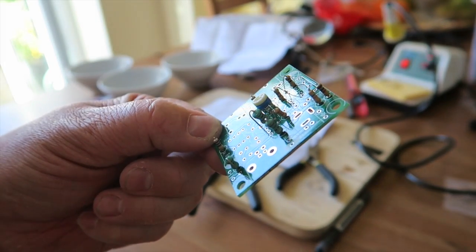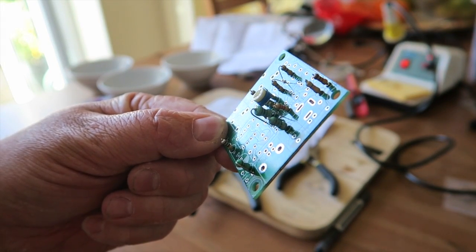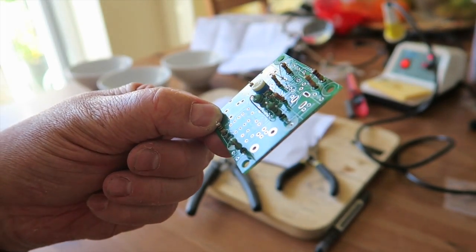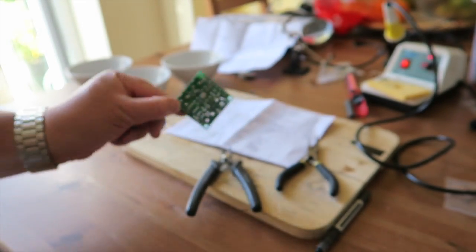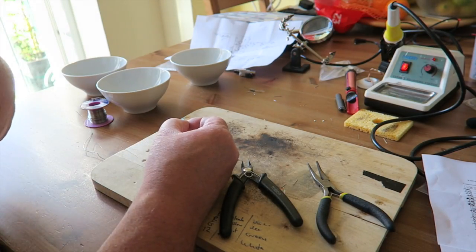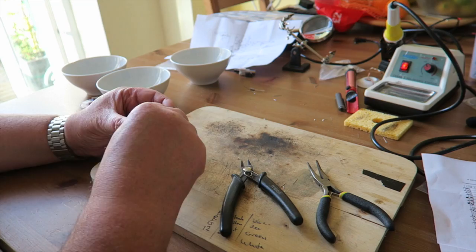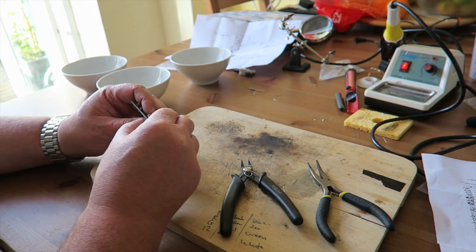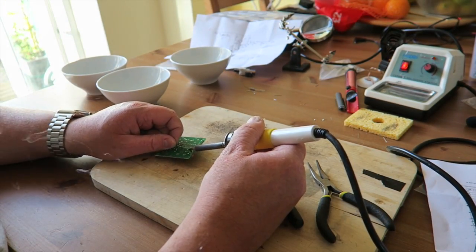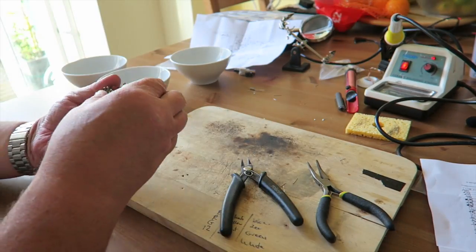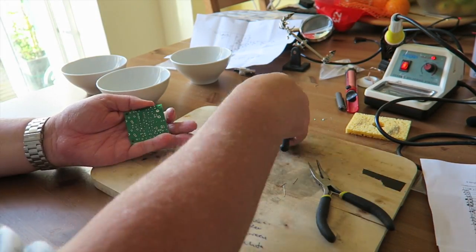Here we are, all the resistors are now fitted including the variable resistor in the middle as well. Now we're going to move on and install the capacitors. Working with the ceramics here, just go around installing each one. As you can see I'm working quite quickly here, going through installing each capacitor and doing exactly what I've done before - bending the legs over so it doesn't fall out and trimming off.